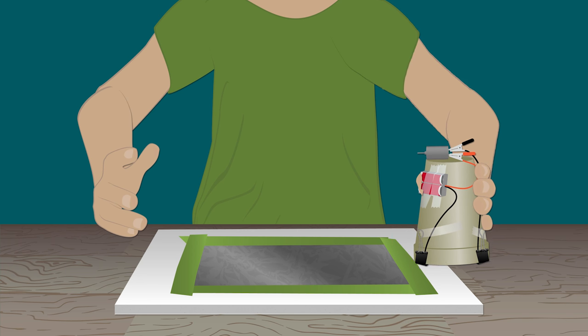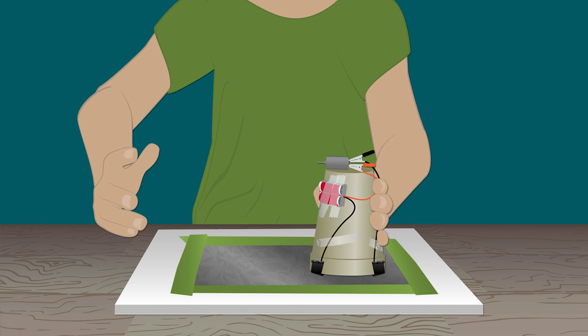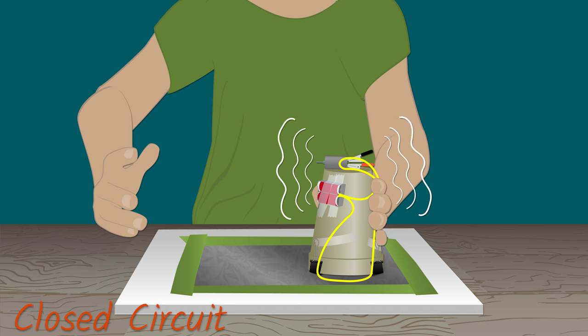Since aluminum foil conducts electricity, Zhang Wei uses it to close the circuit on his robot so that his robot can move. When the aluminum foil touches the paper clips, it completes the circuit and the motor moves.